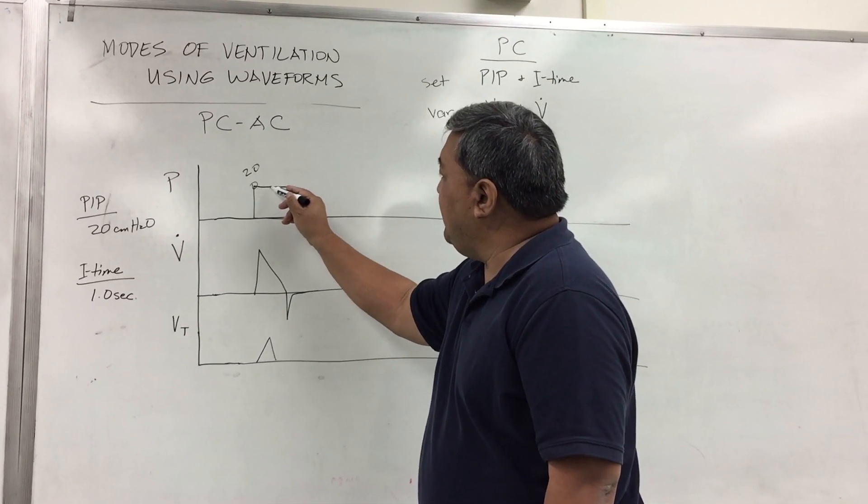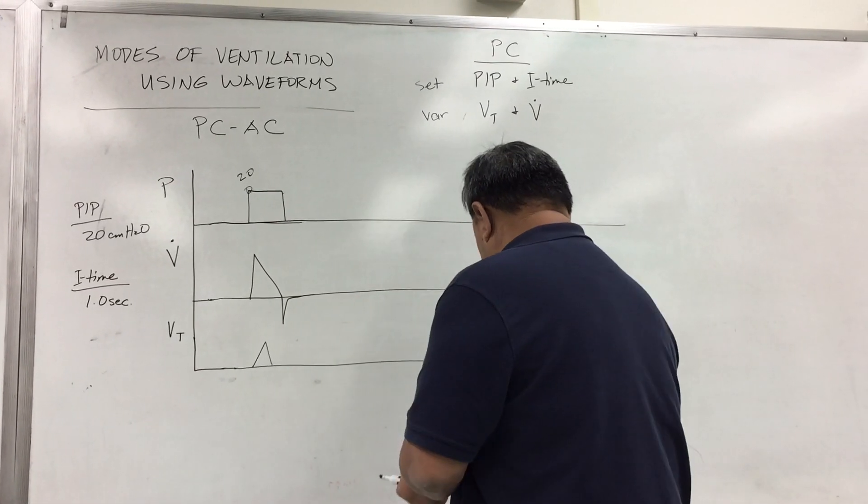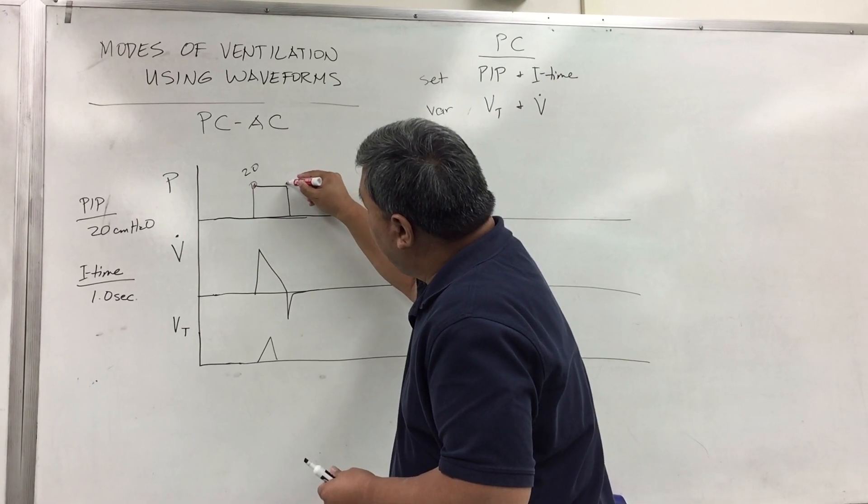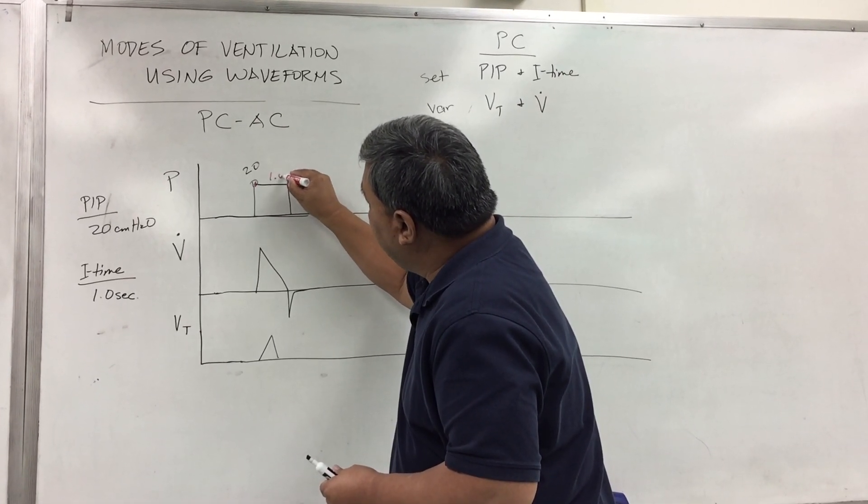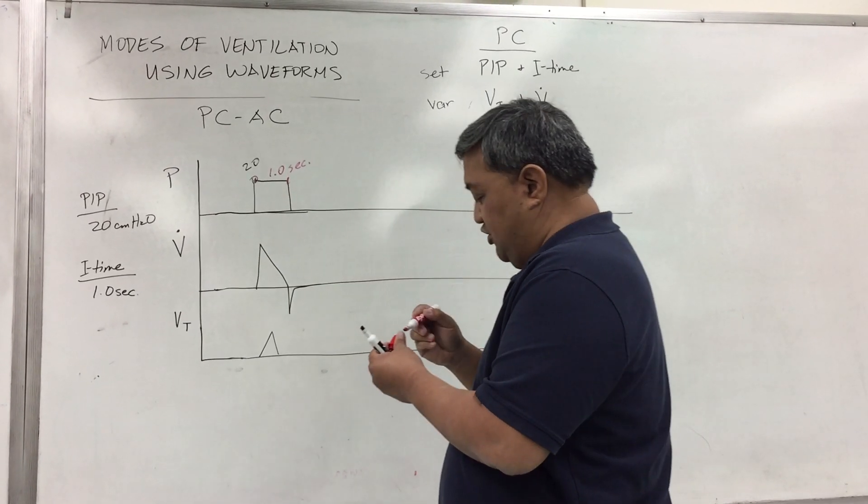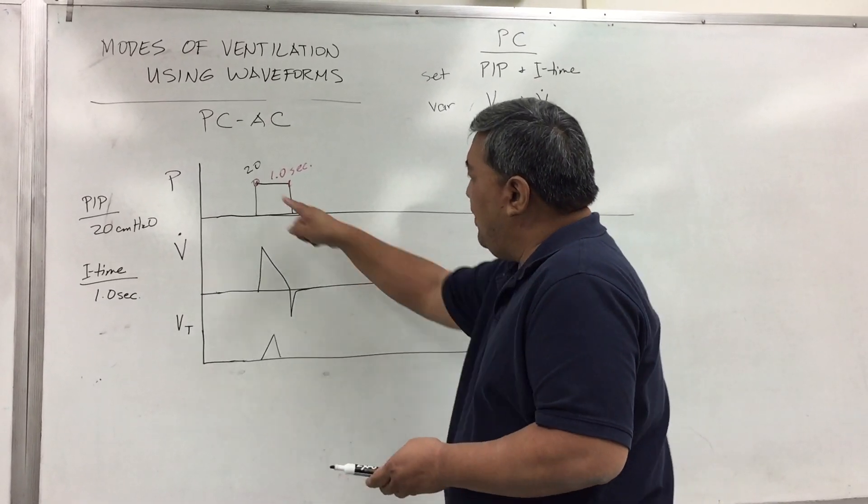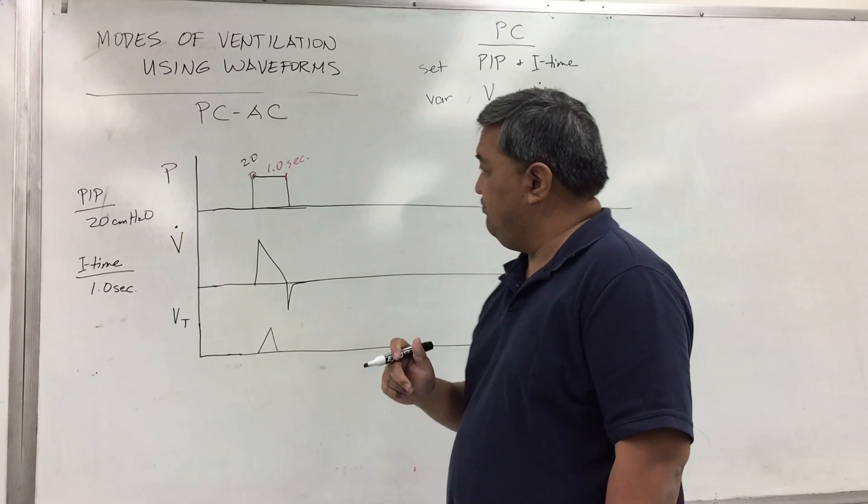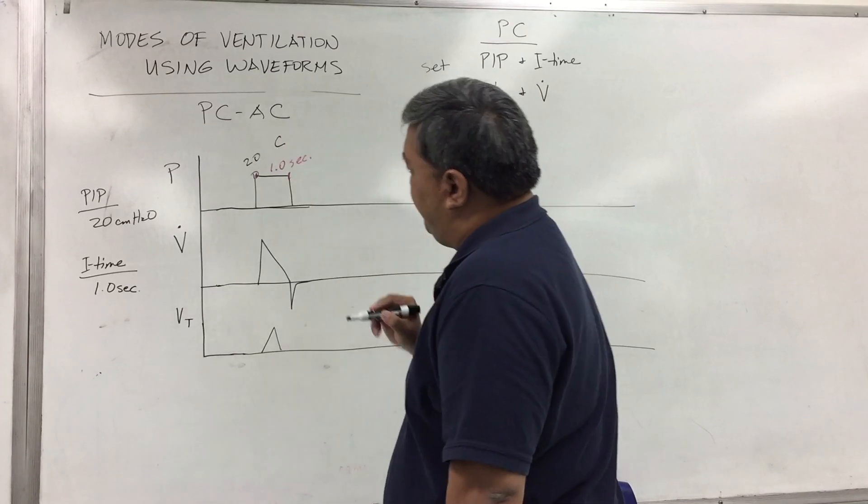Now, from here to here, from this point to this point right here, that's basically one second based on your I time. After that one second is done, it will go into exhalation. This is a controlled breath.